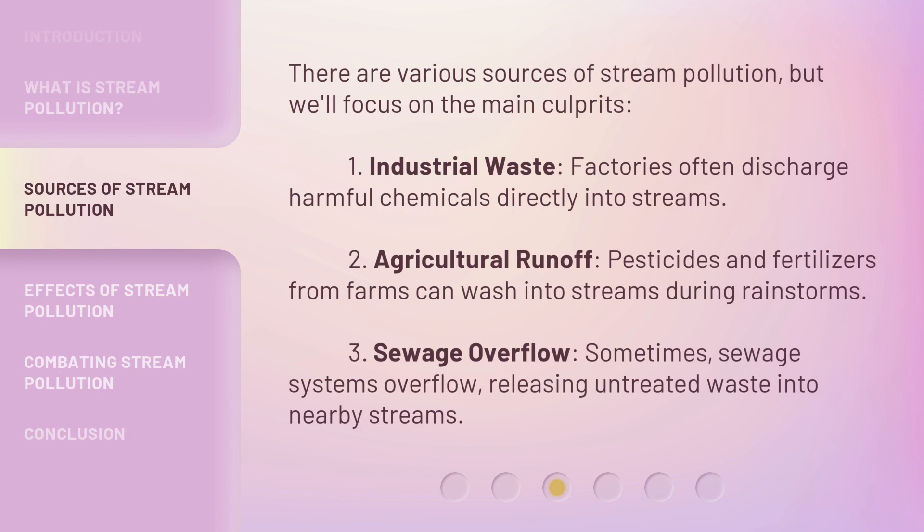There are various sources of stream pollution, but we'll focus on the main culprits. First, industrial waste: factories often discharge harmful chemicals directly into streams.